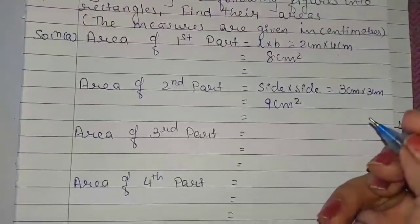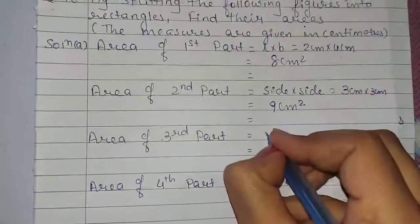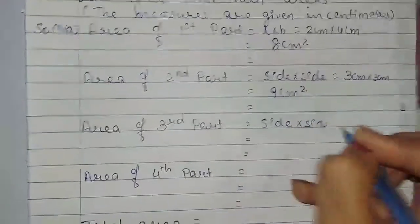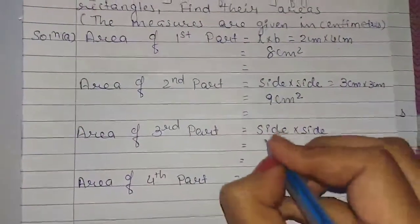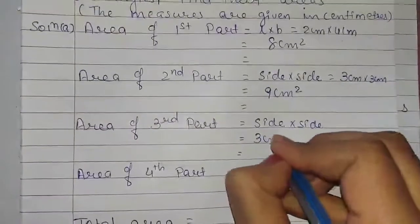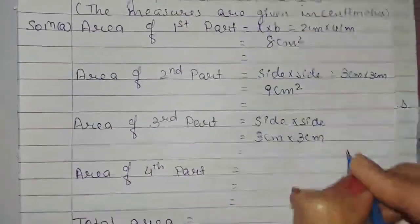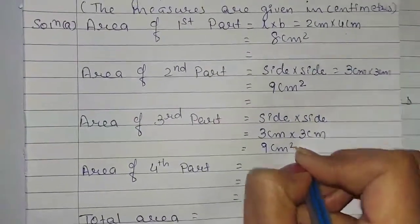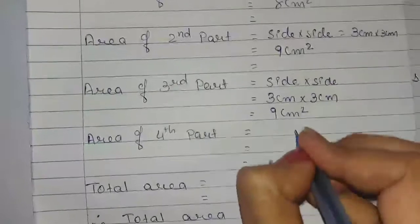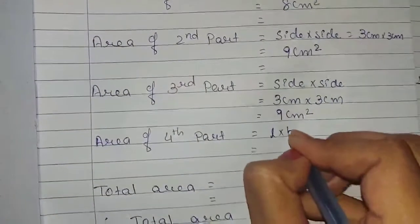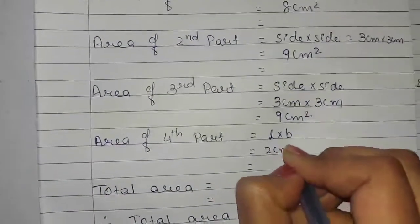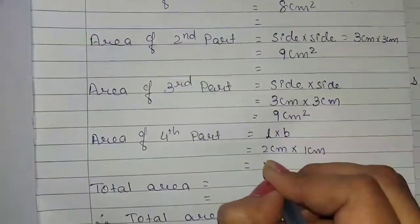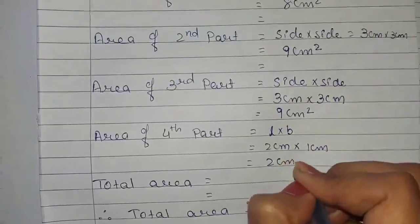Area of the third part is also a square. Therefore, area of third part equals side multiplied by side, which equals 3 cm multiplied by 3 cm, equals 9 cm square. Area of the fourth part is a rectangle, so we write length multiplied by breadth, which equals 2 cm multiplied by 1 cm, equals 2 cm square.